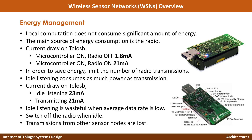In order to save energy, we need to limit the number of radio transmissions and how long each transmission takes. At the same time, idle listening also consumes as much power as transmission because the radio must remain on — for example, idle listening at 23 mA versus transmitting at 21 mA. Idle listening is wasteful when the average data rate is low, so ideally you should switch off the radio when it is idling. However, if you switch it off, transmissions from other sensor nodes could be lost. These are the Telos B nodes widely used in the wireless sensor network domain.